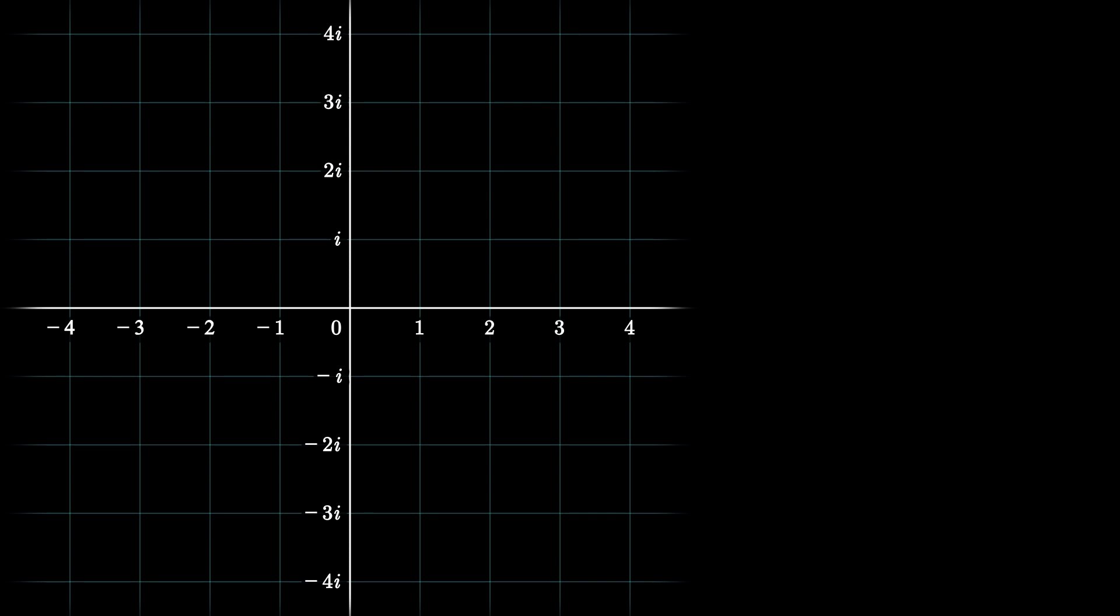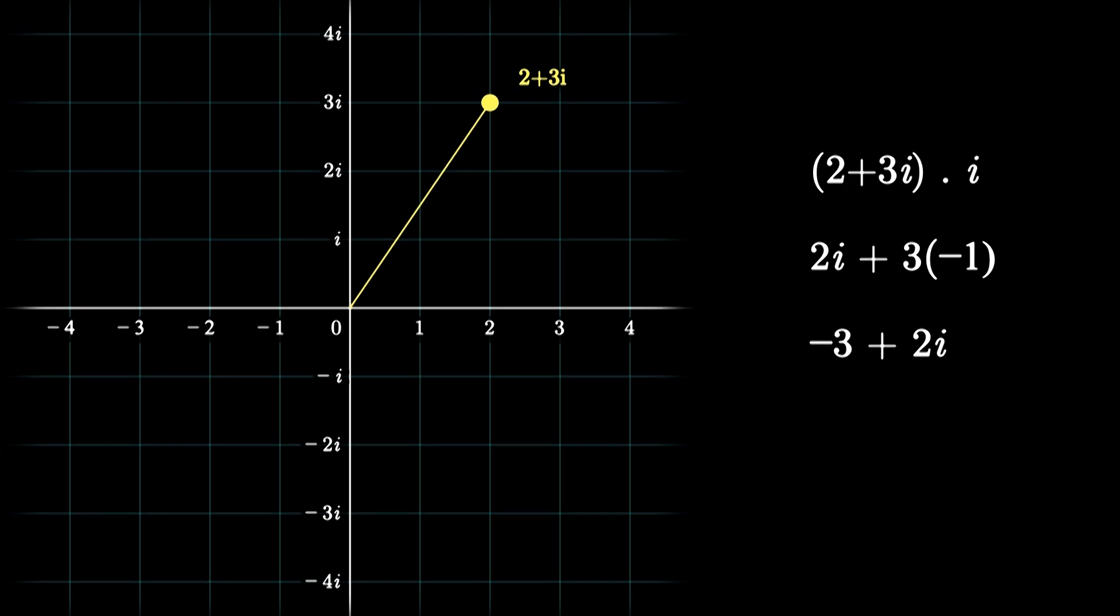So as an example, if you take 2 plus 3i multiplied by i, you can compute its product algebraically to be 2i plus 3i squared. And since i squared equals negative 1, we can write this as minus 3 plus 2i. And indeed, when we rotate the number 2 plus 3i by 90 degrees geometrically, the number we land upon is in fact minus 3 plus 2i.